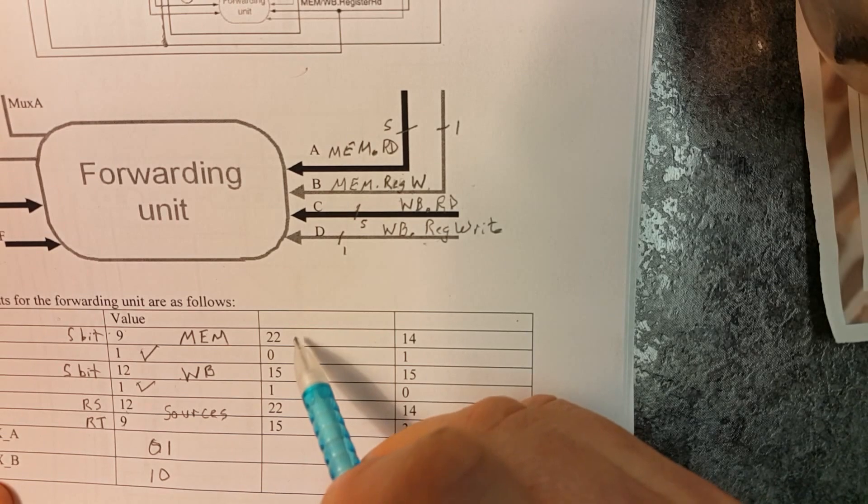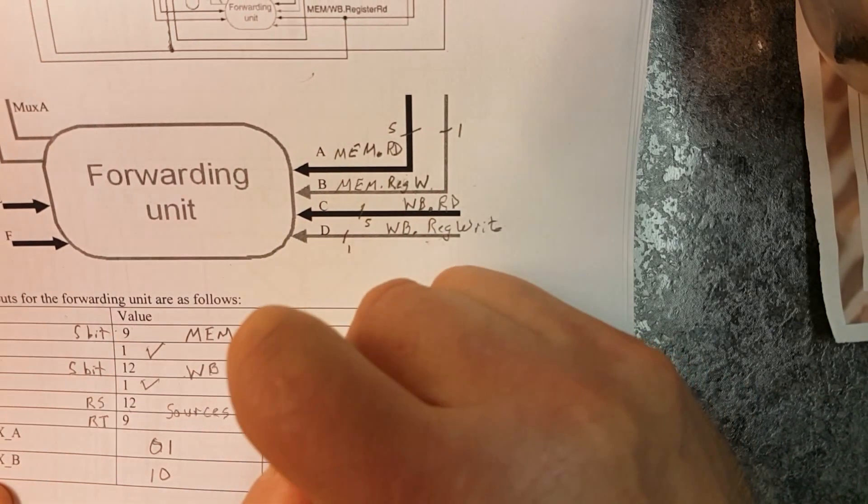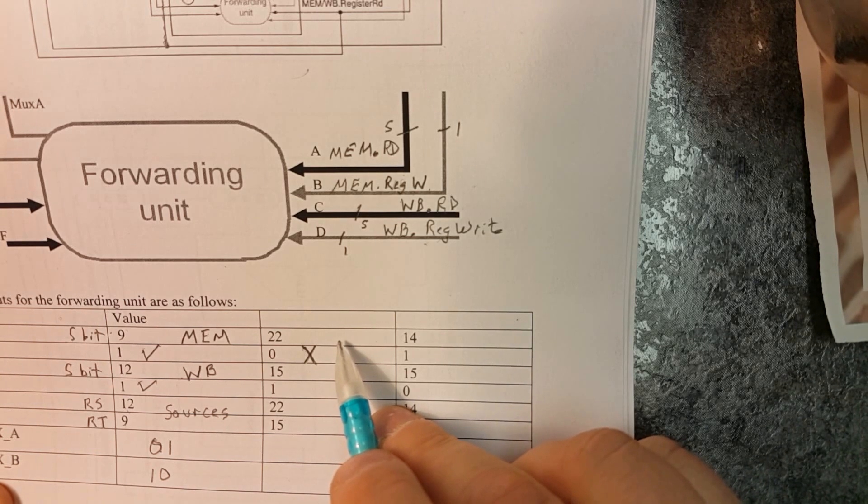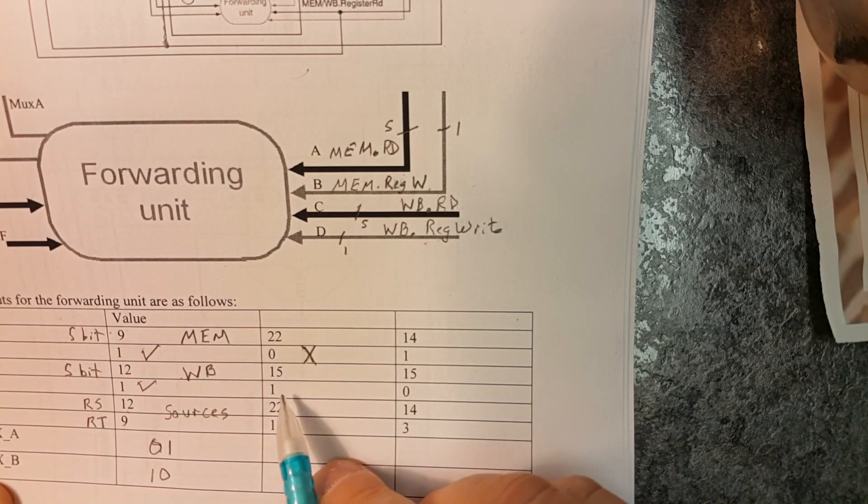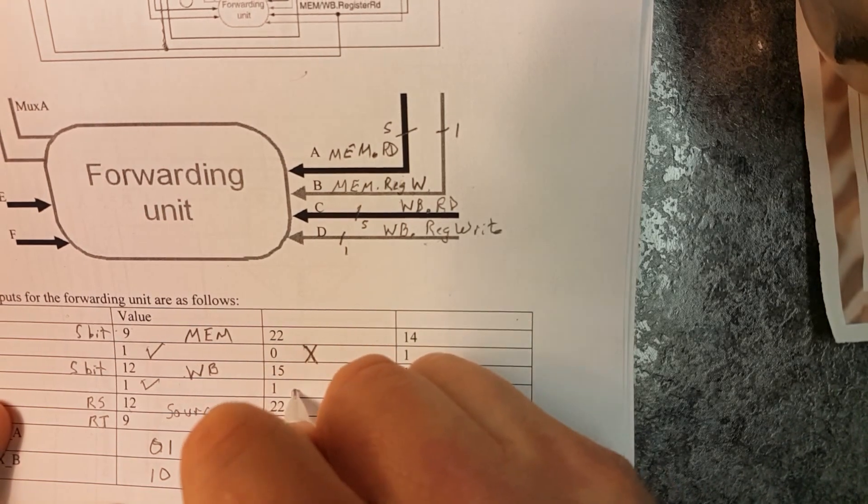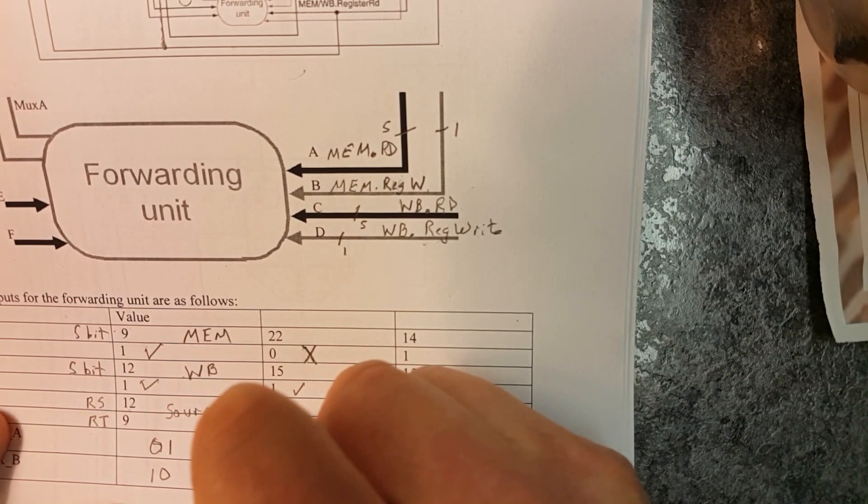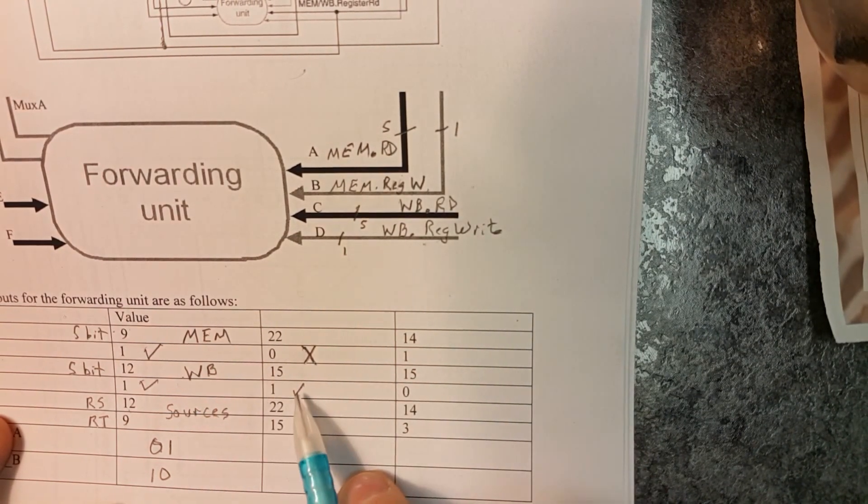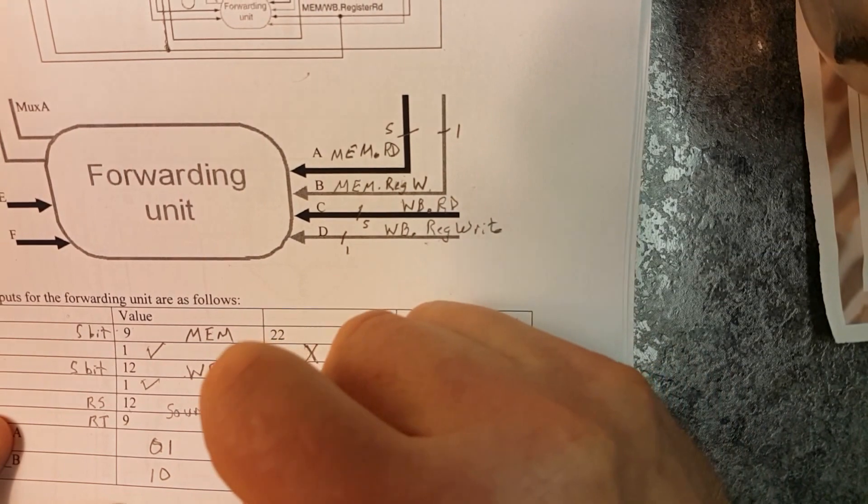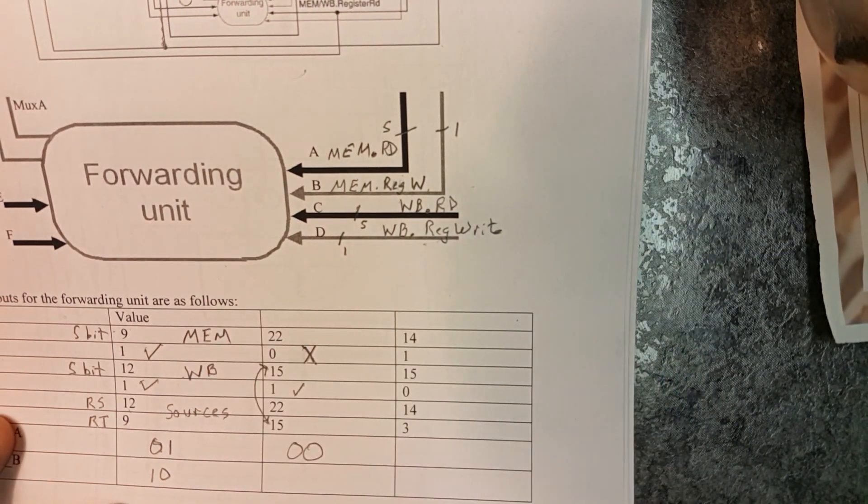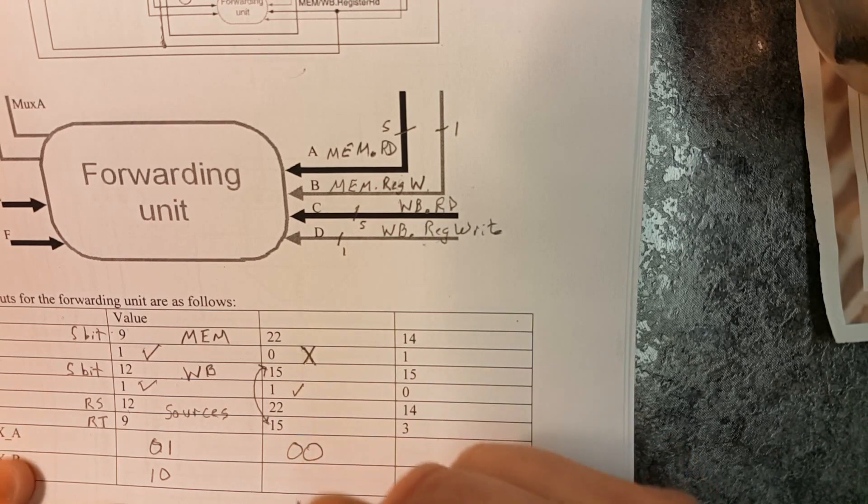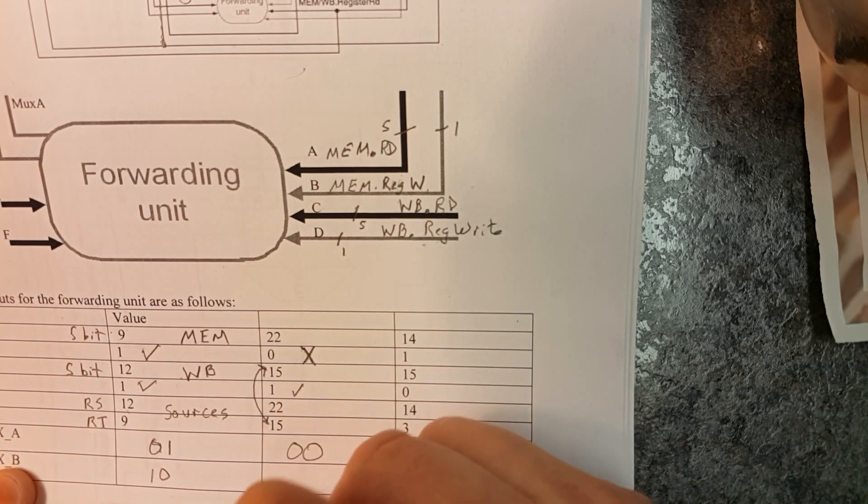Now here, we've got a reg write of 0. That means who cares, it's not writing back. So the MEM phase can never cause a hazard, we never have to worry about that. Then we look at the write back phase, and it is writing back. That's writing back, we might have a problem. Then we check, and with the RS field, it's a 22, it matches, but it's not being written back, so we can just forward regular. However, 15 and 15, there's a match there, and remember this is from the write back phase, and this is for mux B. And so for mux B, we want to use the write back, and we encode that with 0,1.